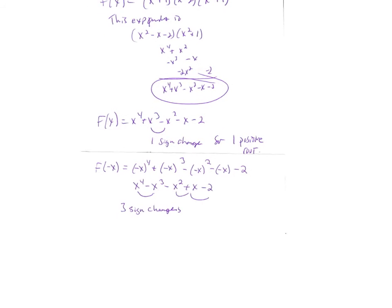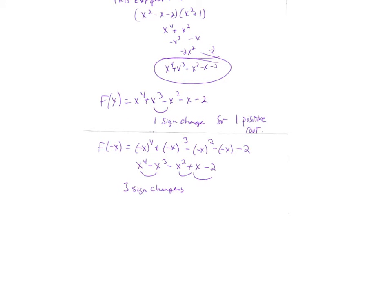So then what happens for the next part of Descartes' Rule of Signs is, you evaluate it for x equals negative x. And I substituted in negative x. Every place I saw an x, I replaced it with negative x.